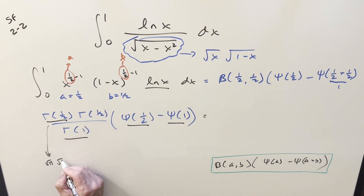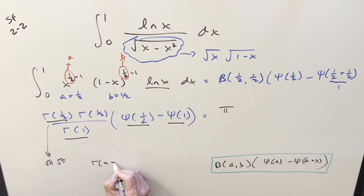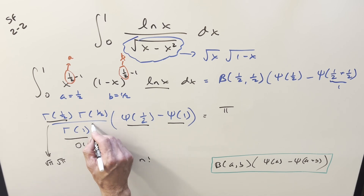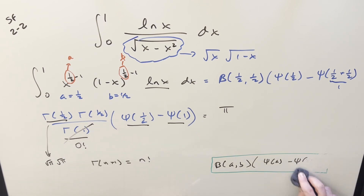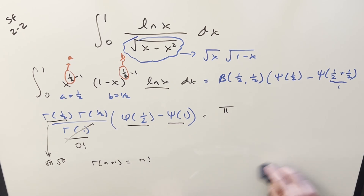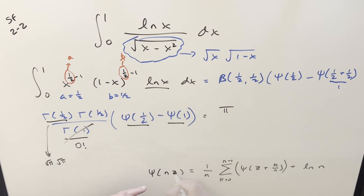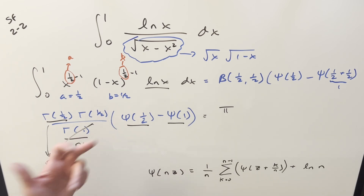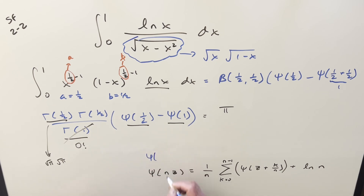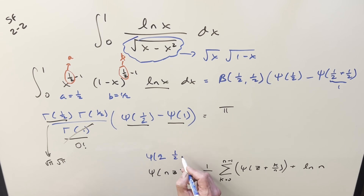For digamma of one half, there are a few ways to do it — let me use the multiplication formula. I'm going to set z equal to one half and n equal to two, since we're going for digamma of one half and that works out nicely. I do have a playlist on the digamma function if you want more details. So plugging in, we have one half out front, and n minus one equals one, so we sum from k equals zero to one of digamma of one half plus k over two, plus ln two.